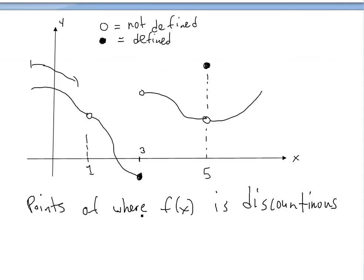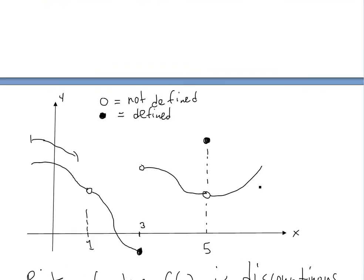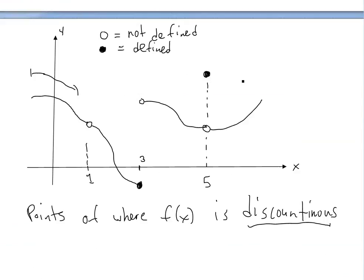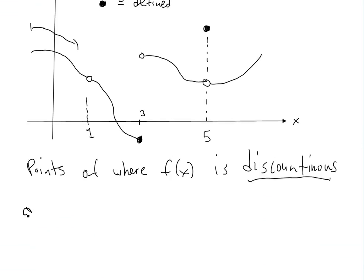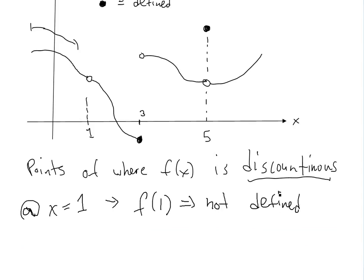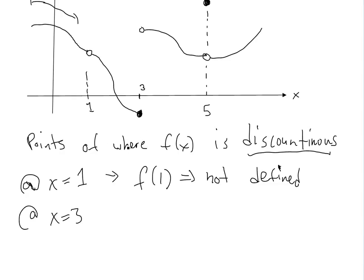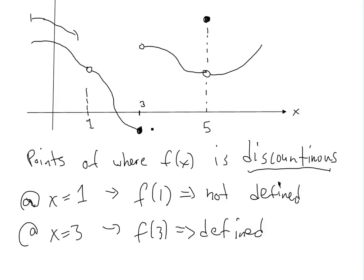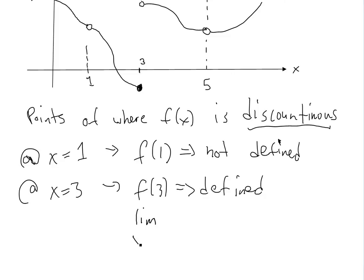Points of discontinuity just means not continuous, or not all three requirements of a continuous function are met. At x equals 1, it's discontinuous because f(1) is not defined — this might be something divided by 0. And at x equals 3, this is also not continuous, because f(3) is defined but the limits from both sides don't equal each other. The limit as x approaches 3 of f(x) doesn't exist.